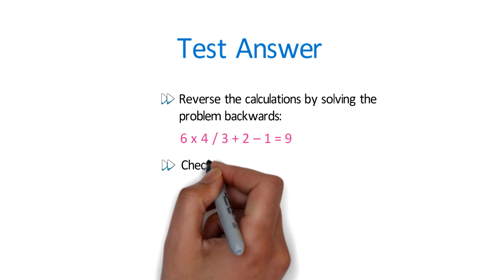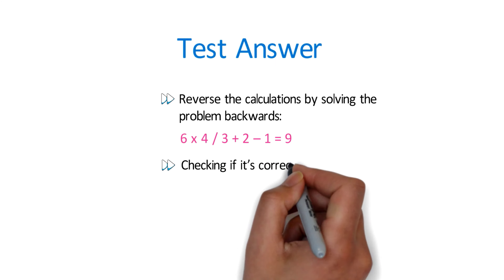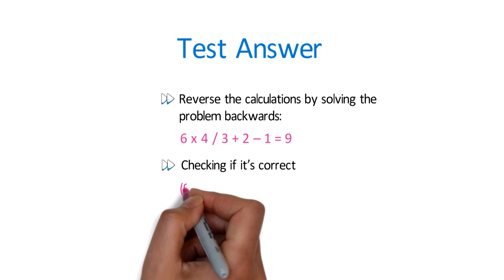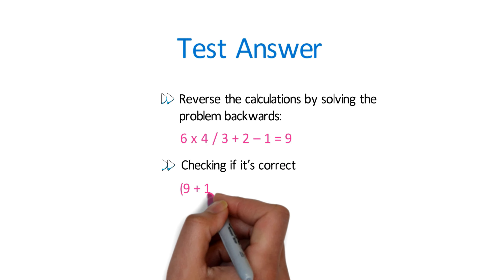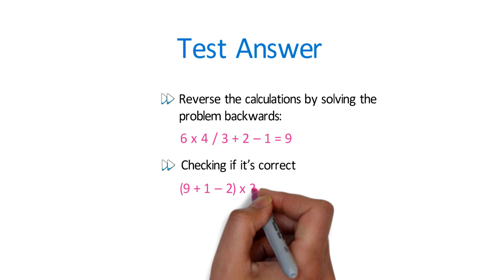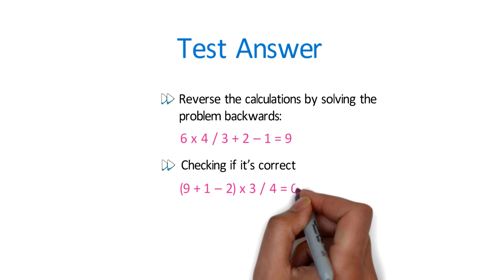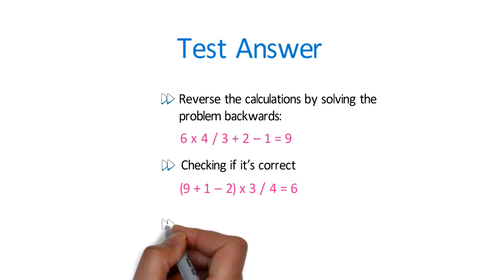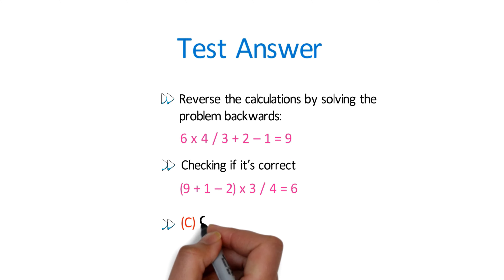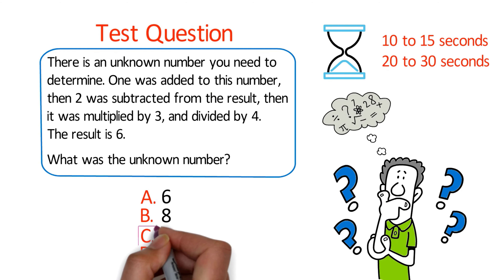Let's verify: (9 + 1 − 2) × 3 ÷ 4 = 8 × 3 ÷ 4 = 24 ÷ 4 = 6. Correct! So the correct choice is C: 9. It's always a good idea to check your answer on the test. Hopefully you've nailed this question and now know how to answer similar problems.